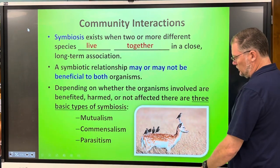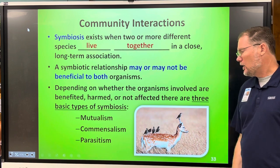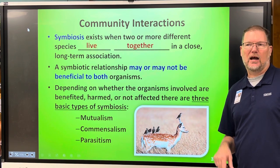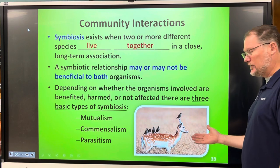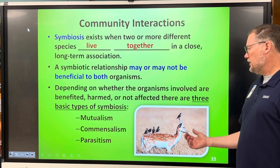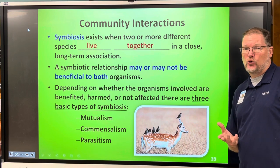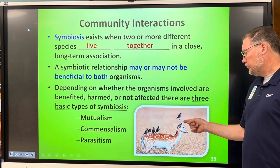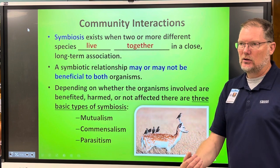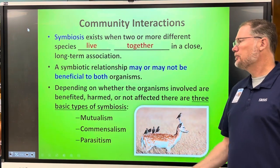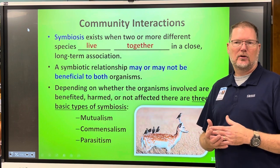Which one of these do you think this is — do you think the deer is hurting the birds? Probably not. Could the birds be hurting the deer? They could be. Do you think the deer is helping the birds? They're eating bugs off of the deer — so the bird is helping the deer by picking off bugs that would otherwise be sucking its blood, and the deer is providing the birds food. This would be an example of mutualism — they're helping each other.